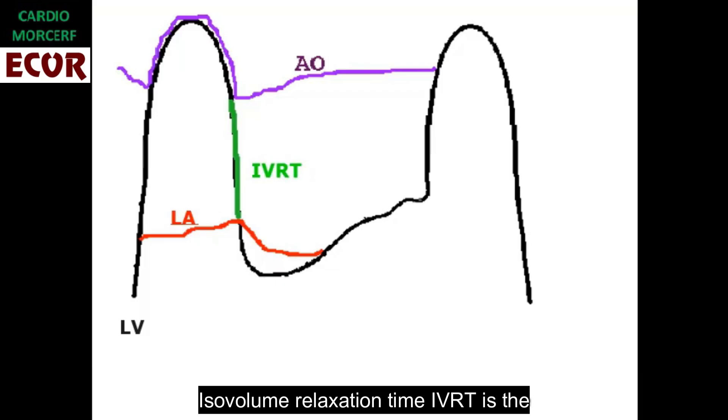Isovolumic relaxation time, IVRT, is the period from the aortic valve closing to the opening of the mitral valve.